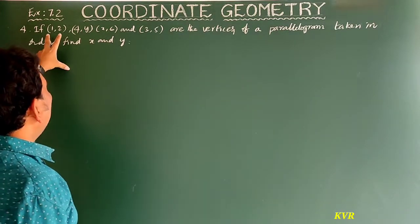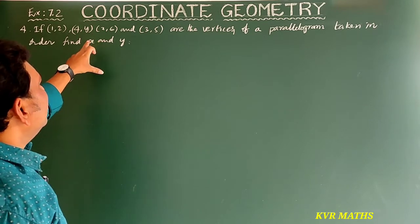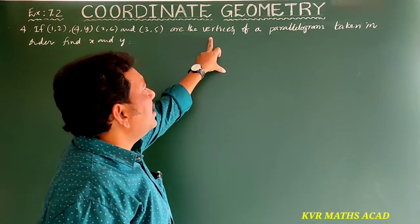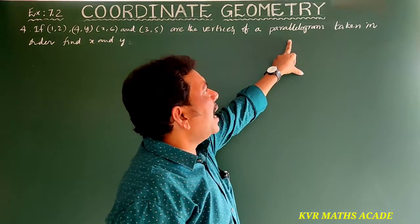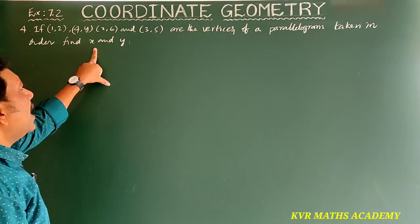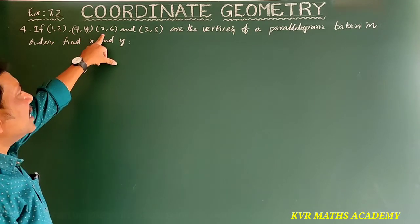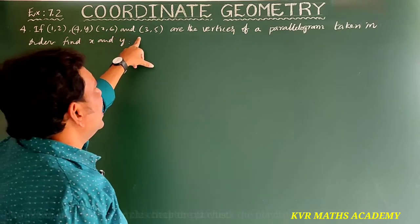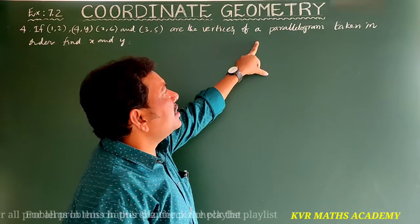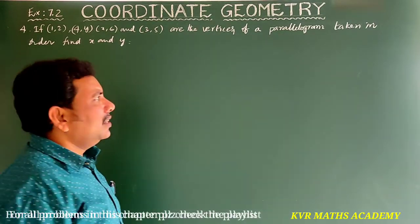This is the fourth question. If (1, 2), (4, y), (x, 6), and (3, 5) are the vertices of a parallelogram taken in order, find x and y.